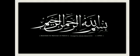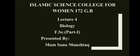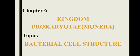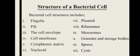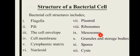bismillahirrahmanirrahim assalamu alaikum students, today we are going to start lecture number four, biology FSc part one. Our discussion topic is from chapter six, that is bacterial cell structure. Previous lecture میں ہم لوگوں نے bacterial cell components کو plasmid تک discuss کر لیا تھا، آج کی lecture میں ہم لوگ further components کو discuss کریں گے۔